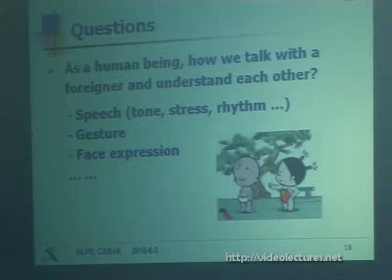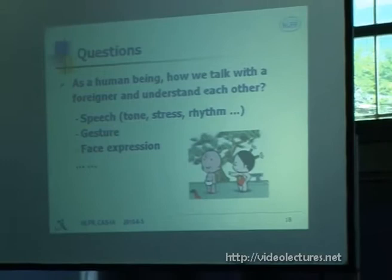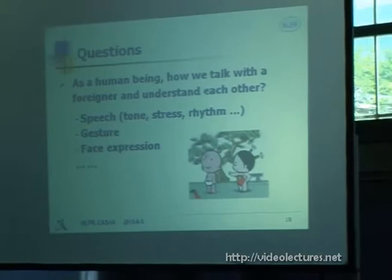Another question: as a human being, how do we talk with foreigners and understand each other? Besides text, everyone uses many other types of information, including speech tone and stress, gestures of the speakers, and facial expressions. You may smile or move your head to show special meaning. Even if I cannot clearly hear a speaker, I can guess the meaning from face expressions to some extent. So besides text, speech and body language information should be used in a parsing and translation model, and especially interaction is necessary.